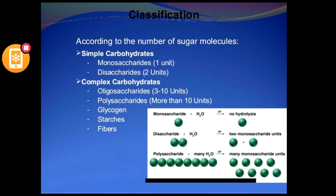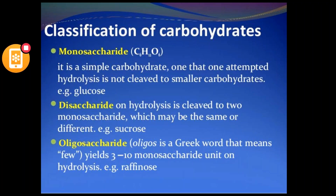Monosaccharide is a simple carbohydrate. When we perform hydrolysis, we get only one sugar — it cannot be hydrolyzed further. If we hydrolyze and get two saccharides, that is called a disaccharide. If on hydrolysis we get three to nine saccharides, that is called an oligosaccharide. The sugars that cannot be further hydrolyzed are called monosaccharides.